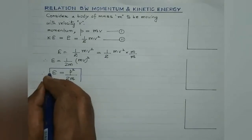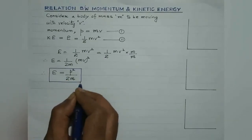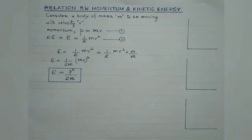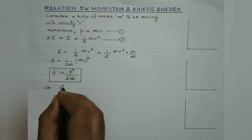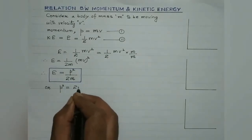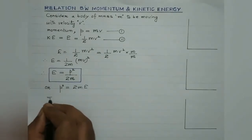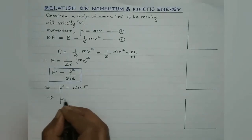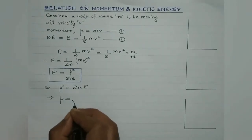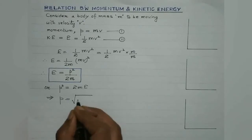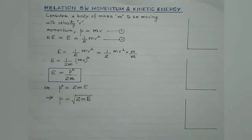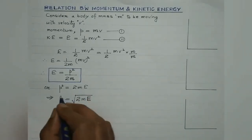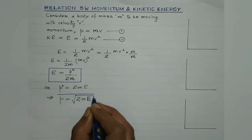So kinetic energy E is equal to p square divided by 2m. Or it may also be written as p square equals 2mE, which implies that momentum p is equal to the square root of 2mE. This is the relationship between the linear momentum and the kinetic energy of the body.